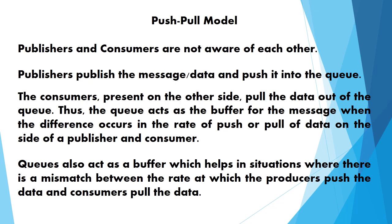The third model is the Push and Pull model. Publishers and consumers are not aware of each other. The publisher publishes the message or data and pushes it into the queue. The consumers on the other side pull the data out of the queue. The queue acts as a buffer for messages when there is a mismatch between the rate at which publishers push data and consumers pull data.